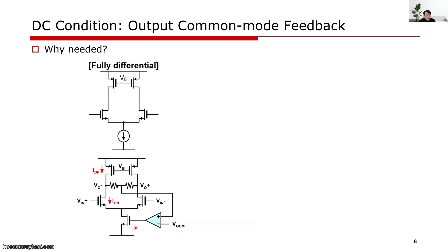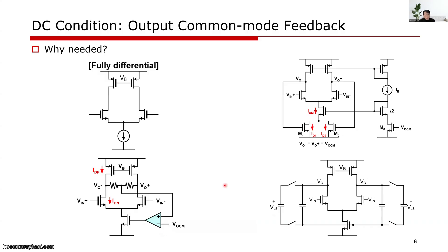In some designs, we don't even need a common mode feedback amplifier. By using the VGS of triode-region transistors, we can define the output DC level. Or by using a DC level shift in the capacitor while making the diode connection through the main amplifier, we can also define the output DC level.